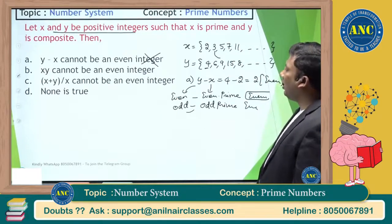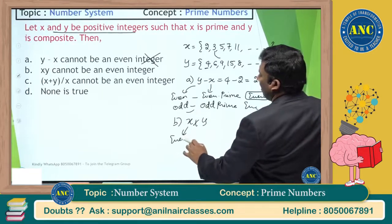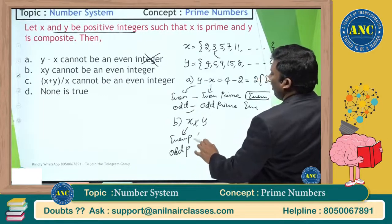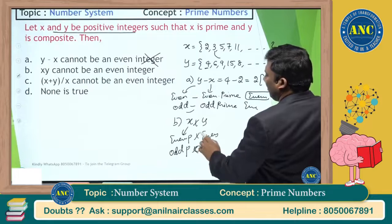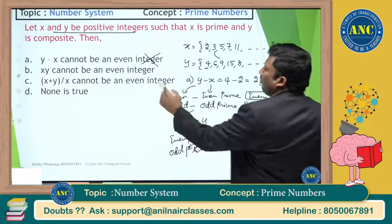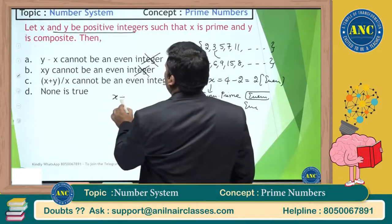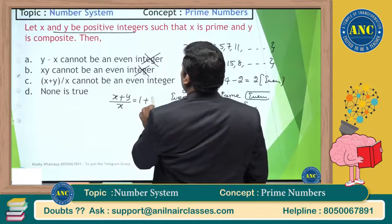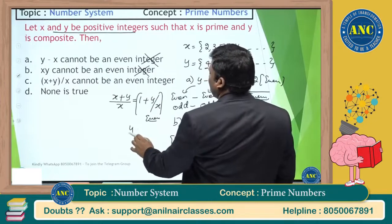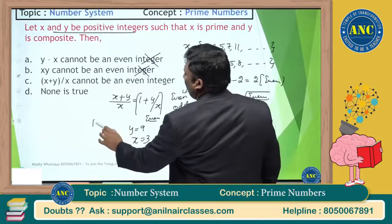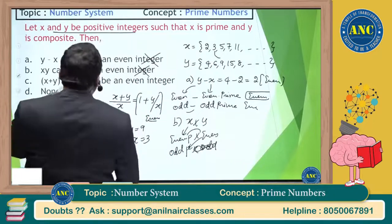The next claim is x and y cannot be integers. But x is prime and y is composite — both are integers by definition. Then checking (x + y)/x = 1 + y/x: if y=9 and x=3, this equals 1 + 3 = 4, which is an even number. So all three statements are incorrect.